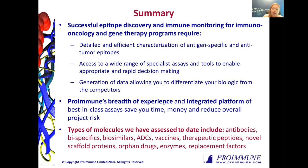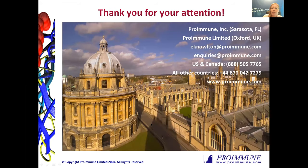To have successful epitope and immune monitoring programs really requires a detailed and efficient characterization of antigen-specific and anti-tumor epitopes — or any type of epitope depending on your program. It's important to have access to a wide range of specialist assays and tools to enable appropriate decision making. The type of data I shared today will help differentiate your biologic, vaccine, or immunotherapy from competitors. We offer these reagents and services as an integrated platform, which ultimately saves you time and money, allowing you to best select the assay or reagent that will answer your questions. With that, I'd be happy to take any questions.